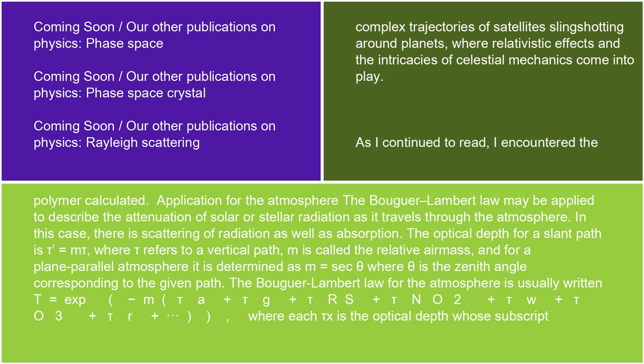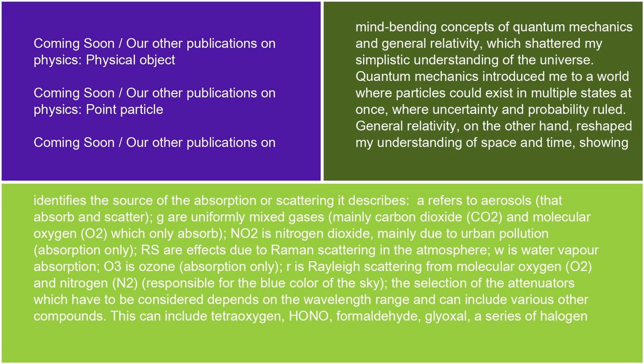The Bouguer-Lambert Law for the atmosphere is usually written: T = exp(−m[τ_A + τ_G + τ_RS + τ_NO2 + τ_W + τ_O3 + τ_R + …]), where each τ_x is the optical depth whose subscript identifies the source of the absorption or scattering: A refers to aerosols that absorb and scatter; G are uniformly mixed gases, mainly carbon dioxide (CO₂) and molecular oxygen (O₂), which only absorb; NO₂ is nitrogen dioxide, mainly due to urban pollution, absorption only.